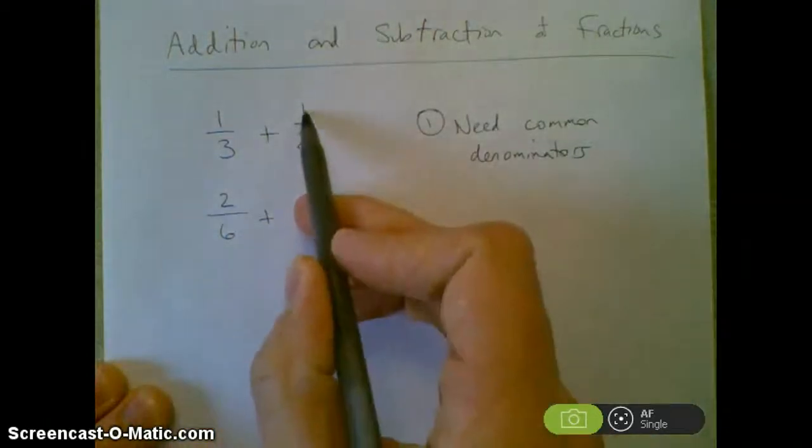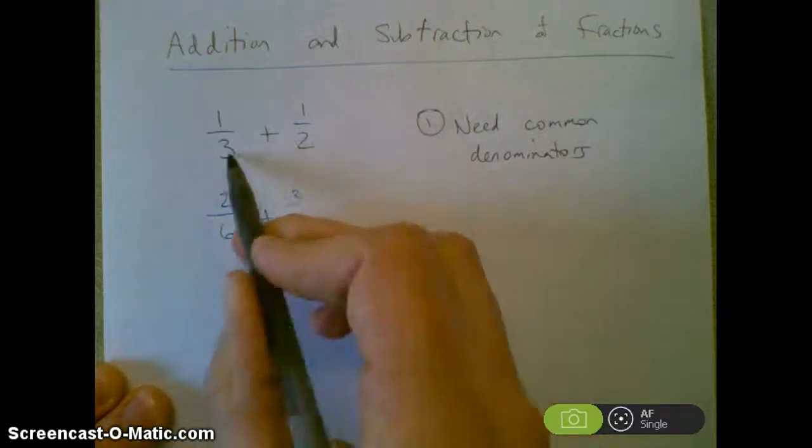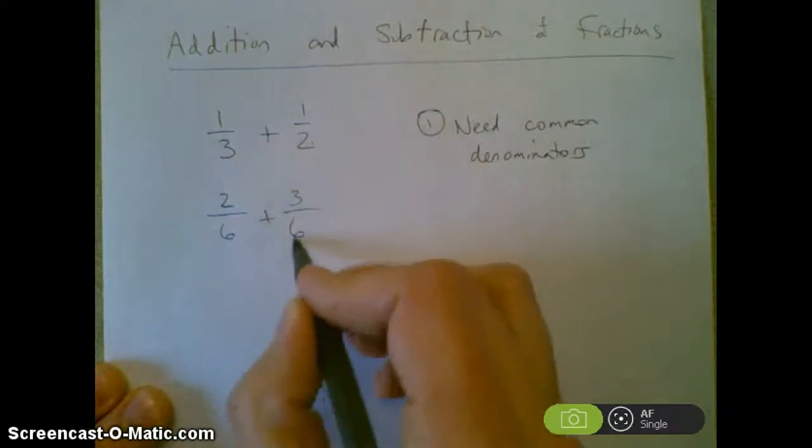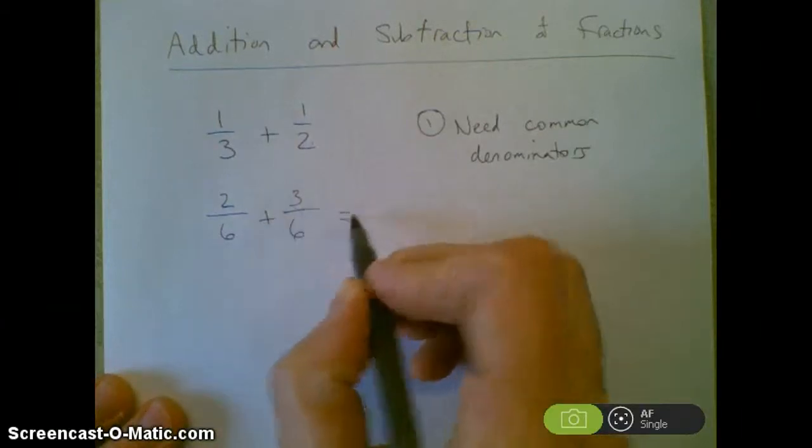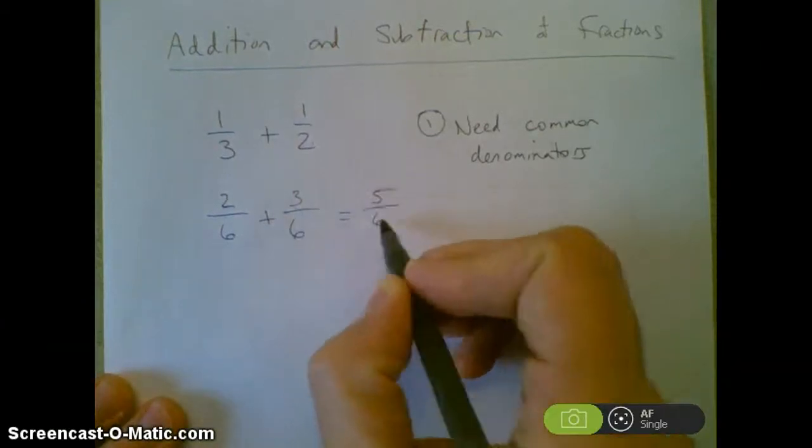plus 1 times 3 is 3, 2 times 3 is 6. So now I can add these up. I have 2/6 and another 3/6 gives me 5/6.